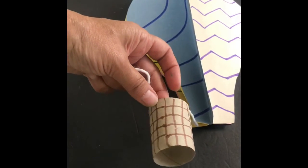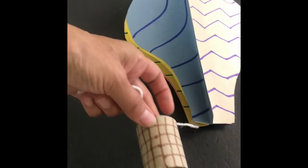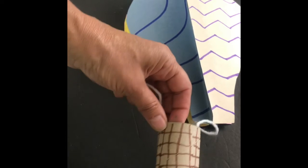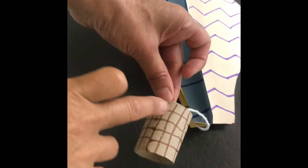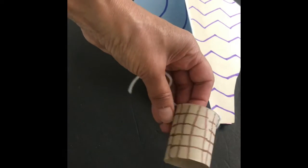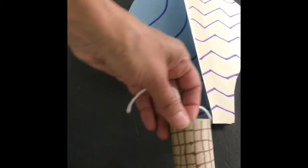I used a recycled toilet paper roll to create a basket for my hot air balloon. I used both vertical and horizontal lines to make it look like a real basket.